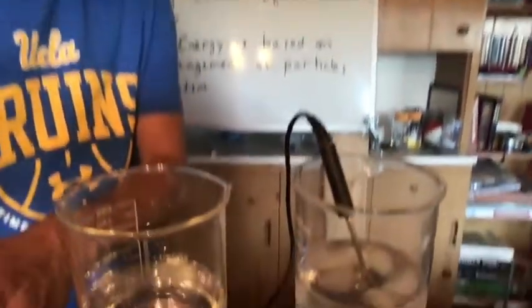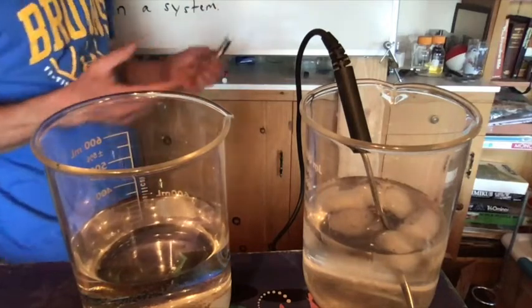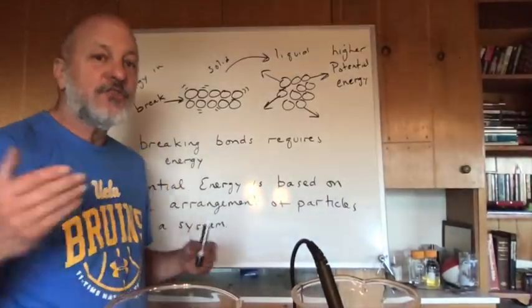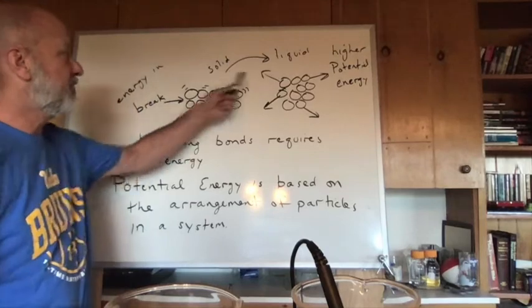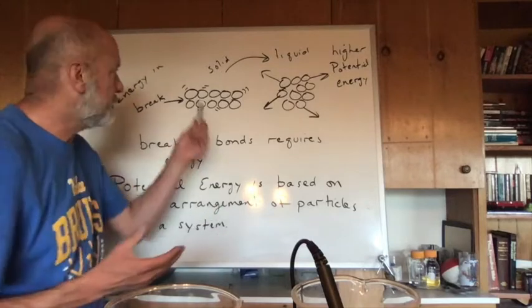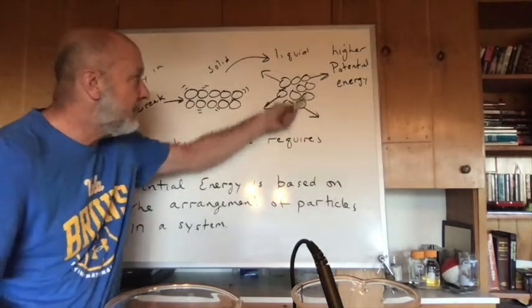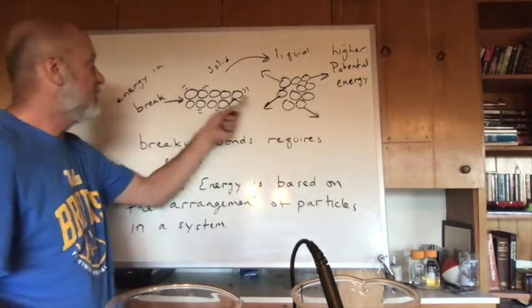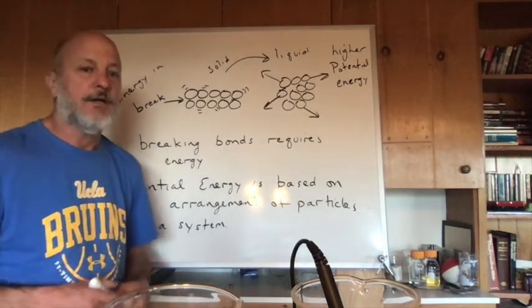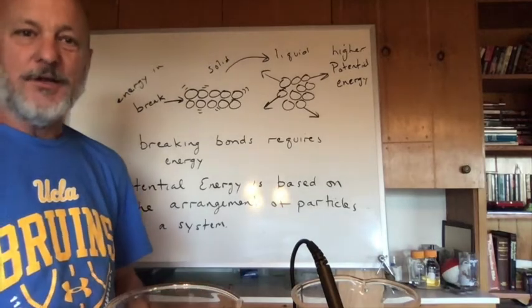So why did the ice water get so much colder? Because it took energy to melt the ice. Melting required energy to break those bonds, and that energy is stored as increased potential energy. Where did that energy come from? It came from the room-temperature water — the room-temperature water gave up some of its energy of motion to increase the potential energy of the water as it melted. We'll continue exploring this; there's a lot more coming on potential energy.